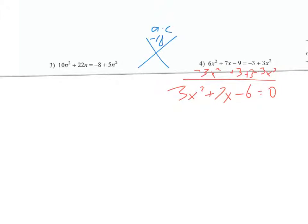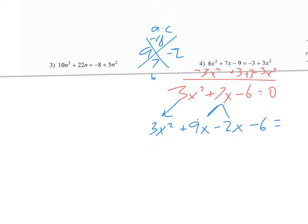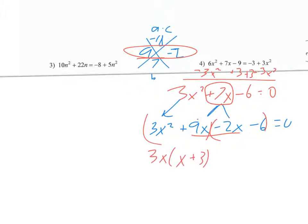I'll try factoring. A times C is negative 18 and B is seven. Positive nine and negative two multiply to negative 18 and add to positive seven. Since I have three X squared out front, I need grouping: three X squared plus nine X minus two X minus six. Grouping the first pair, I take out three X leaving X plus three; from the second pair I take out negative two, also leaving X plus three. So I get the factors three X minus two and X plus three.